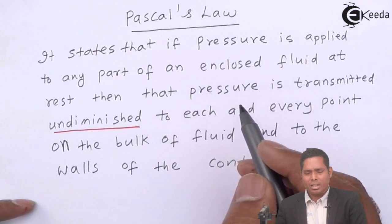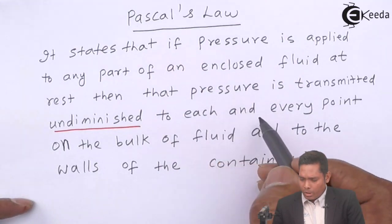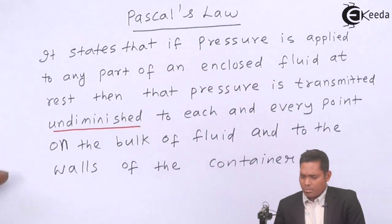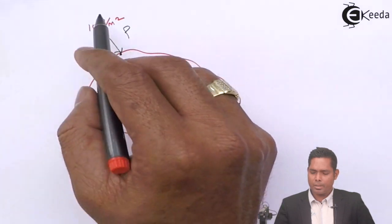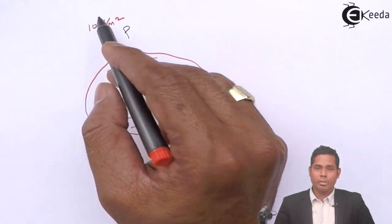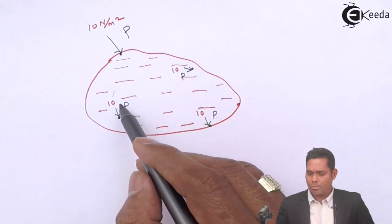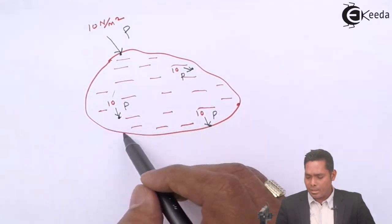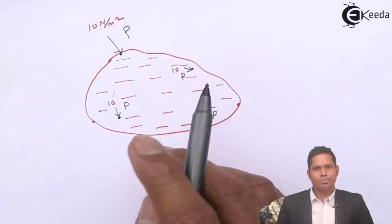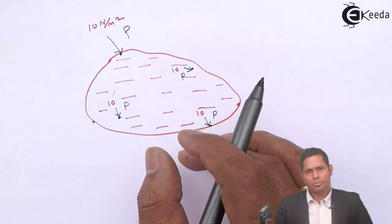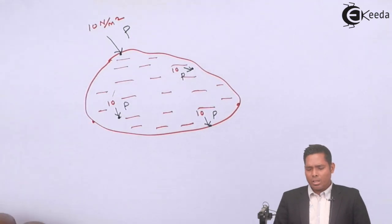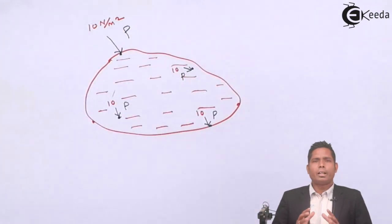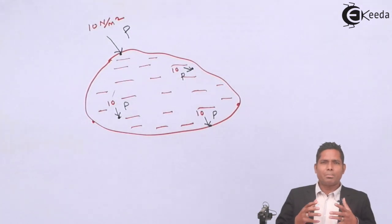Pressure is a scalar quantity, so you don't have to think of the direction. The pressure is transmitted to each and every point on the bulk of the liquid and to the walls of the container — the wall will also feel the same pressure. If I increase the pressure from 10 to 20 Newton per meter square, all points will experience 20 Pascal, including any point on the wall. This is the meaning of Pascal's law — it describes how pressure is transmitted to any point in the fluid and to the walls, undiminished in magnitude.